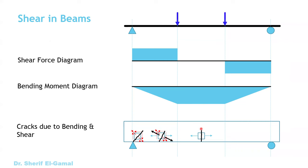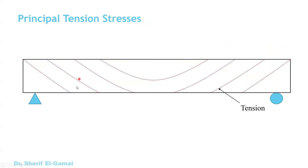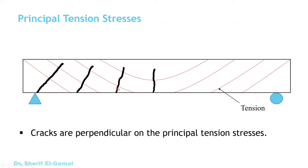So you can see that the crack at the middle part is almost vertical, and starting when you go toward the support, it will start getting more and more inclined until it reaches about 45 degrees at the support. This can be summarized in the principal tension stress diagram of the beam. At the middle part the principal stresses are almost horizontal, giving vertical cracks, while close to the support they become inclined. This is showing the cracks in a reinforced concrete beam under flexural and shear stresses — they are always perpendicular to the principal tension stresses.